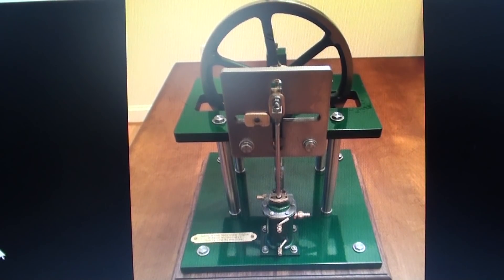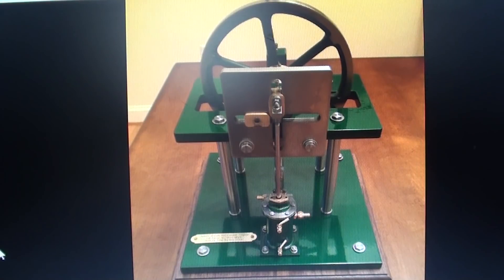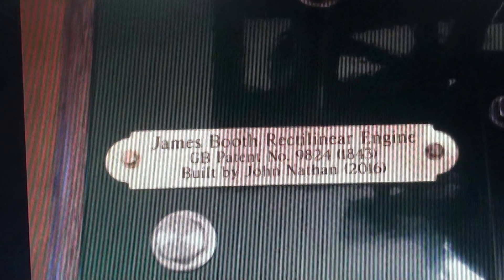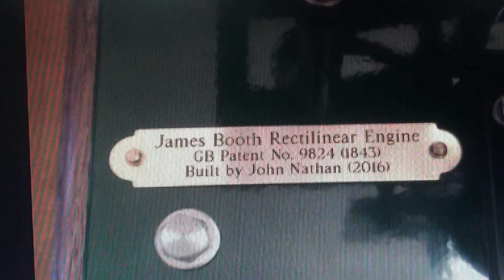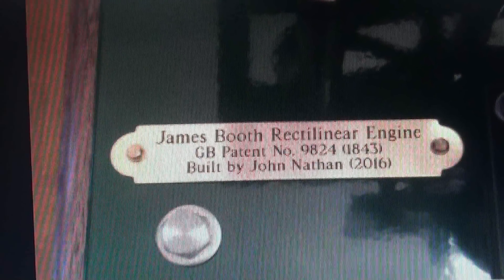I'm back to model making now. John Nathan, who is a patent attorney and a model maker and just a good guy, sent me pictures of a rectilinear engine that he recently made. There's one view of it. There's another one along with his name. And notice that he mentions the patent, which goes way back to the 1840s. It's a British patent. And I'll show you that, but the pictures aren't very good.